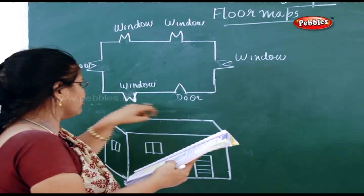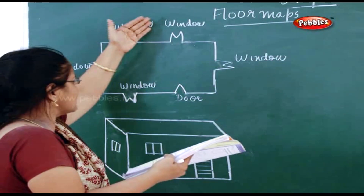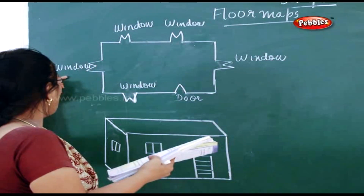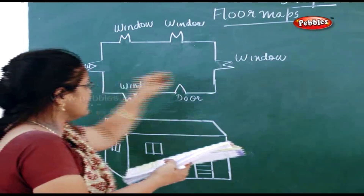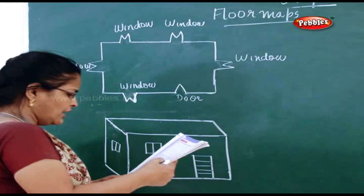Is it clear now? One window and door in the front, two windows at the back, one window on the left side, one window on the right side.